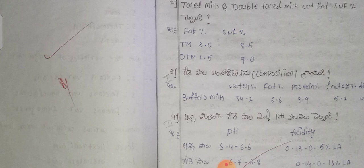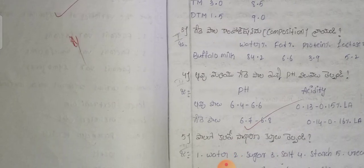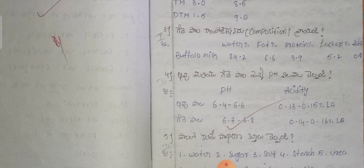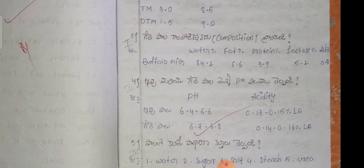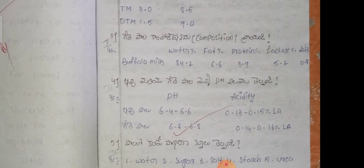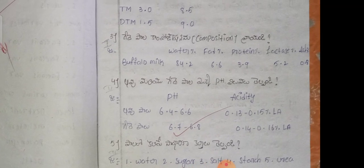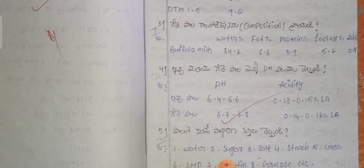Buffalo milk composition: water 84.2%, fat 6.6%, proteins 3.9%, lactose 5.2%, ash 0.8%. Buffalo milk pH ranges from 6.6 to 6.7–6.8. Acidity ranges from 0.13 to 0.15.